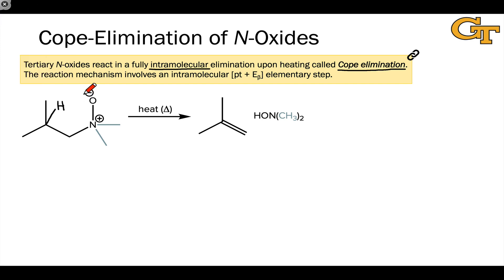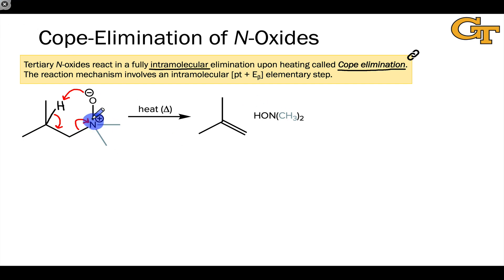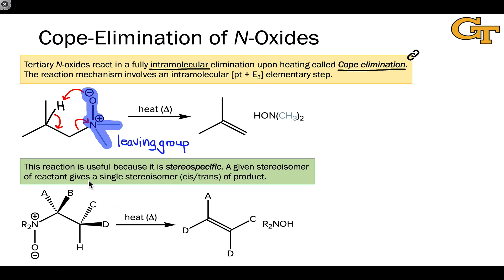We can think of the N-oxide oxygen as a base inside the molecule, so it can accomplish elimination if it can reach a beta hydrogen in the appropriate position. This electron flow leads directly to the alkene and the hydroxylamine. The N-oxide nitrogen and everything attached to it acts as a leaving group. Because the electron flow is completely intramolecular, the reaction is stereospecific.